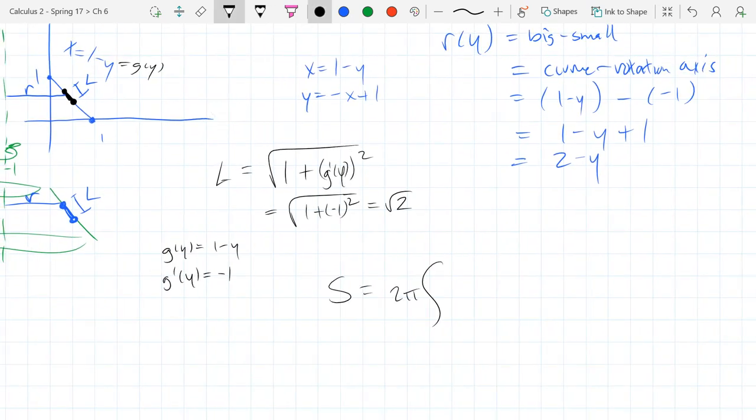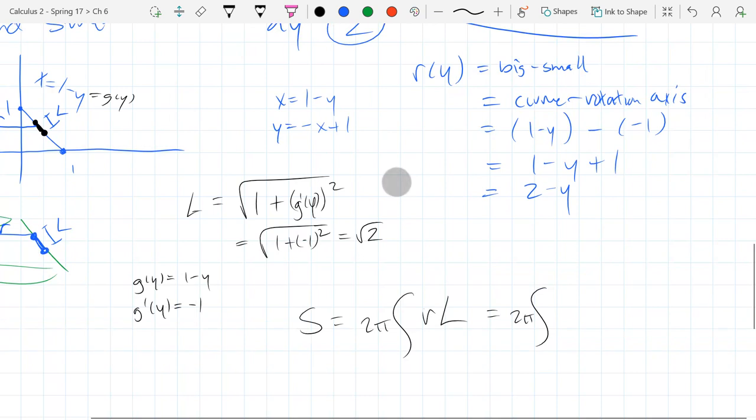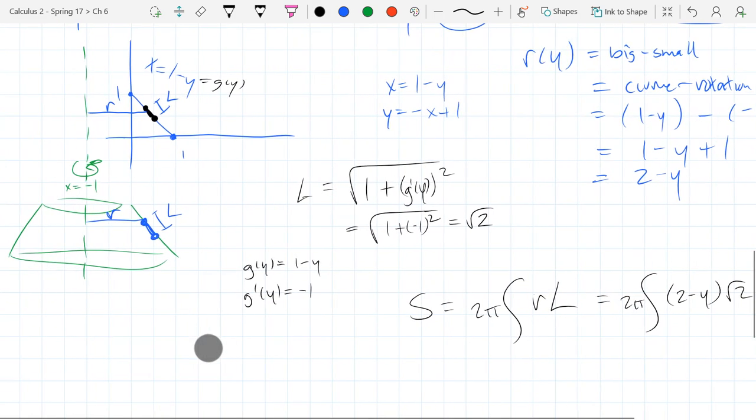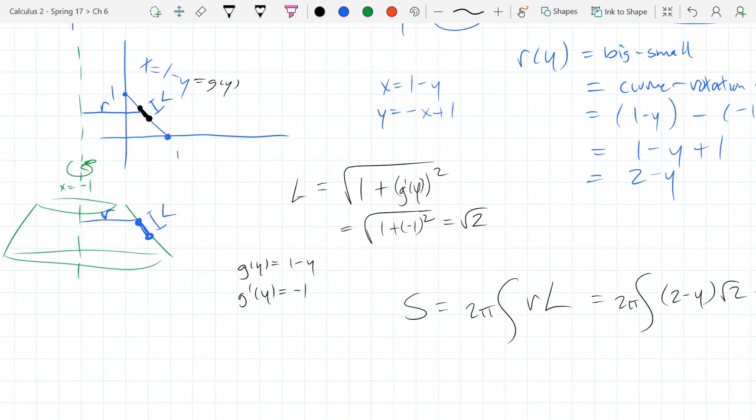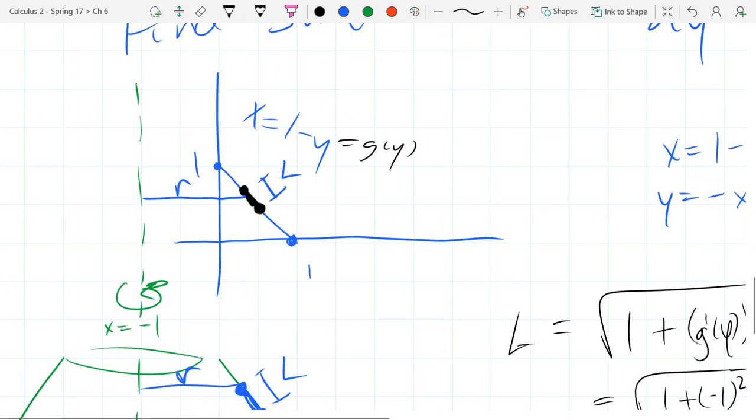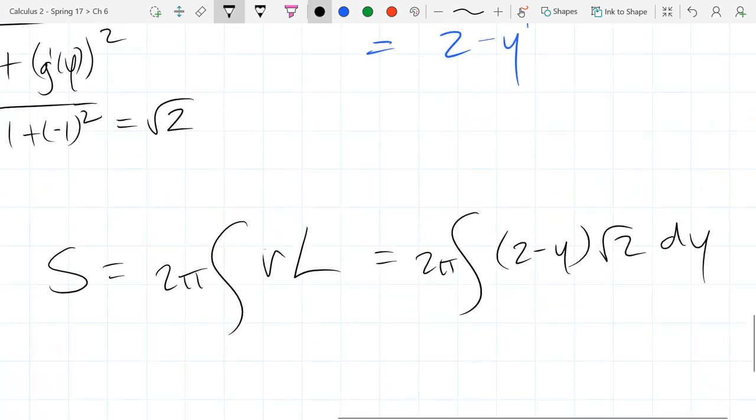So surface area, 2 pi r l. So r is 2 minus y, l is just square root 2, we have a dy. And what about a and b? What are our minimum maximum y values? Let me look at our original drawing. Going 0 to 1. We're going on the y-axis, so these are y0 to y1.